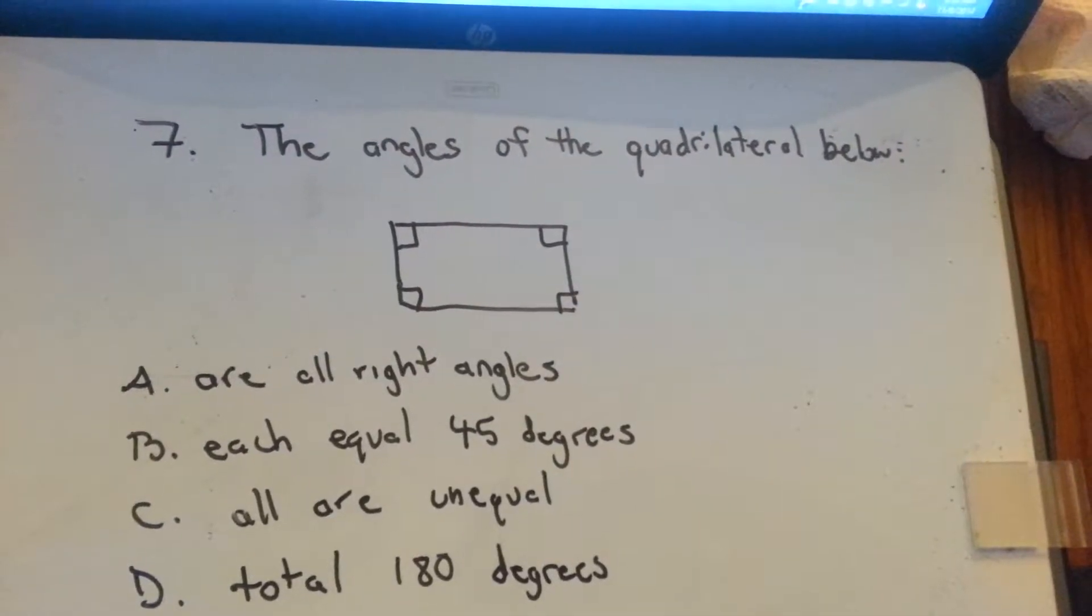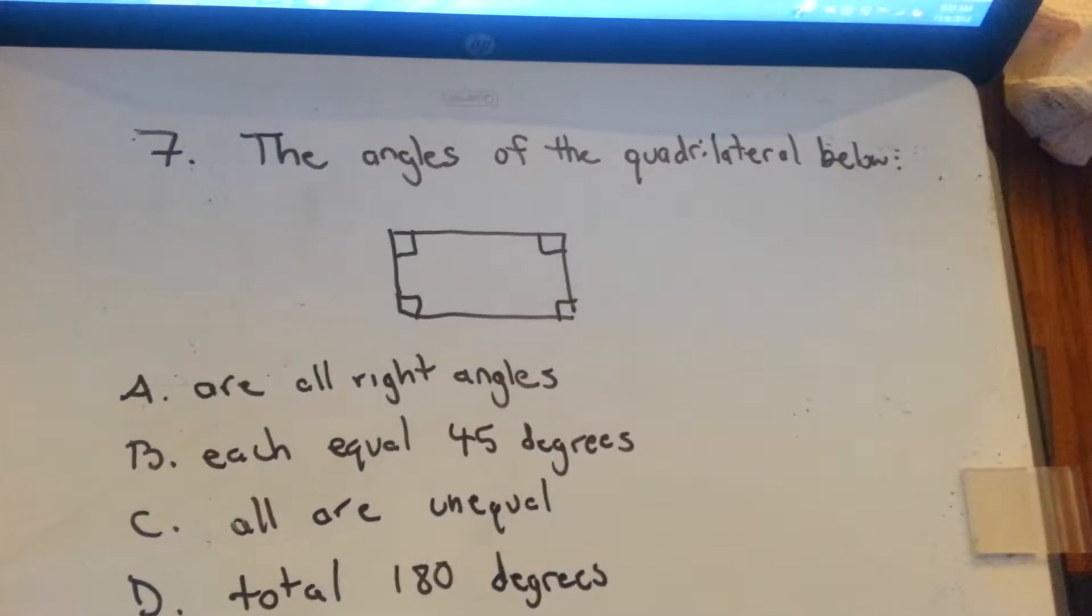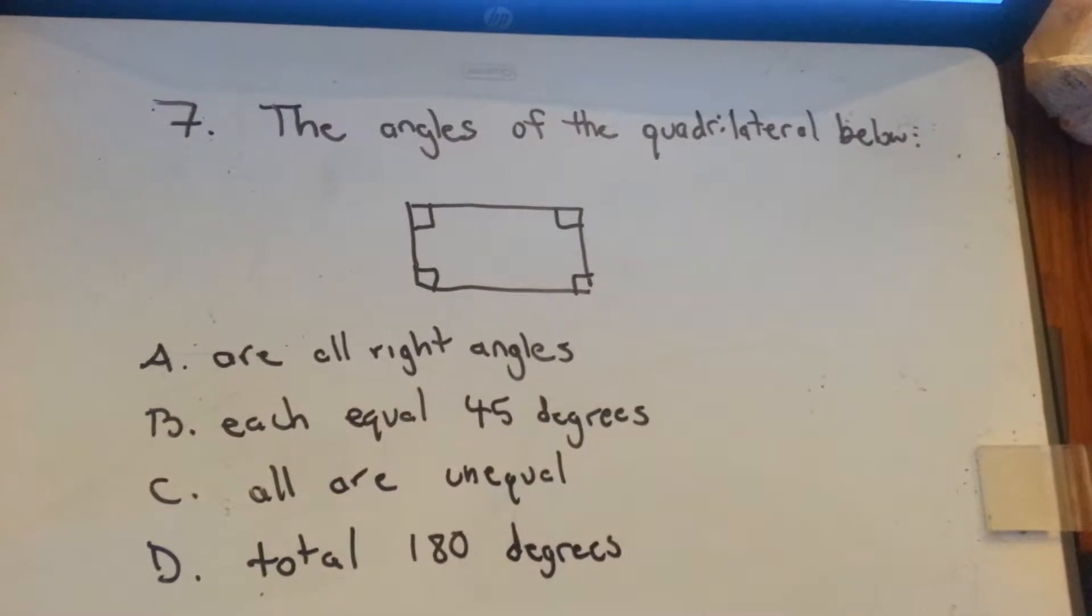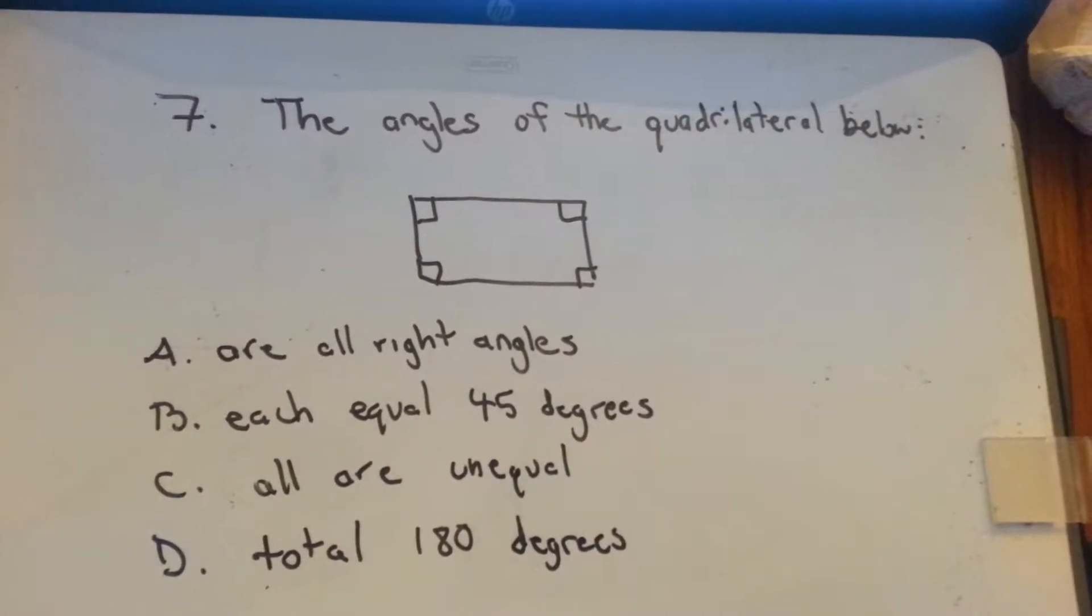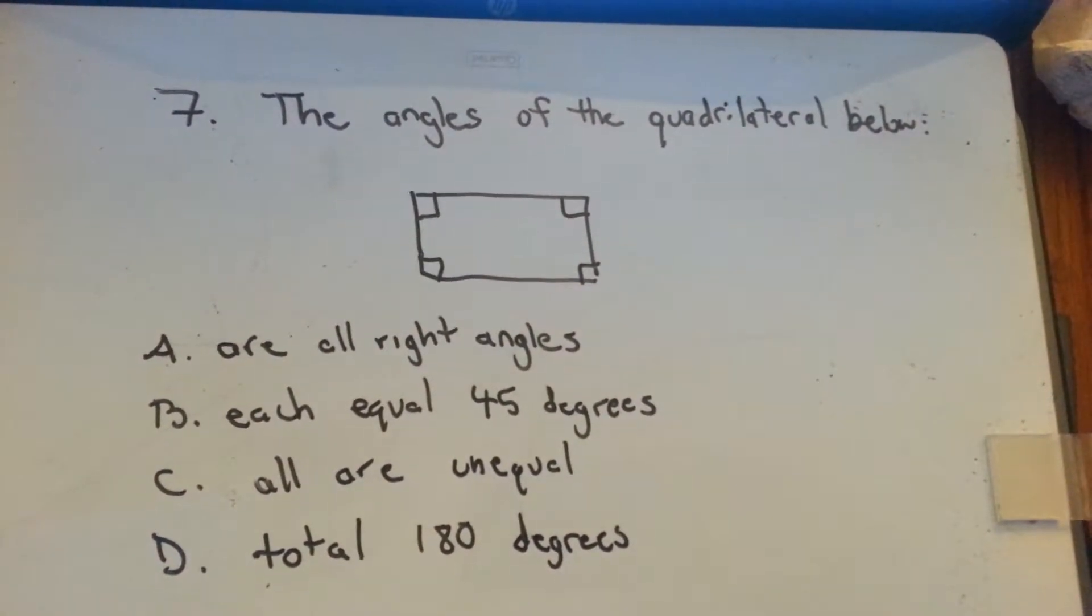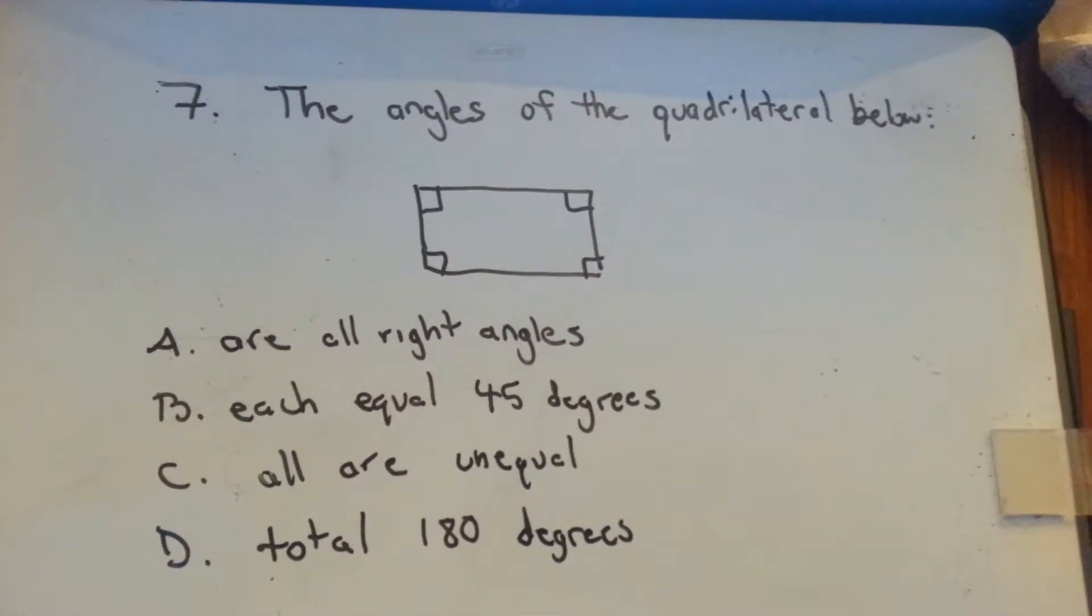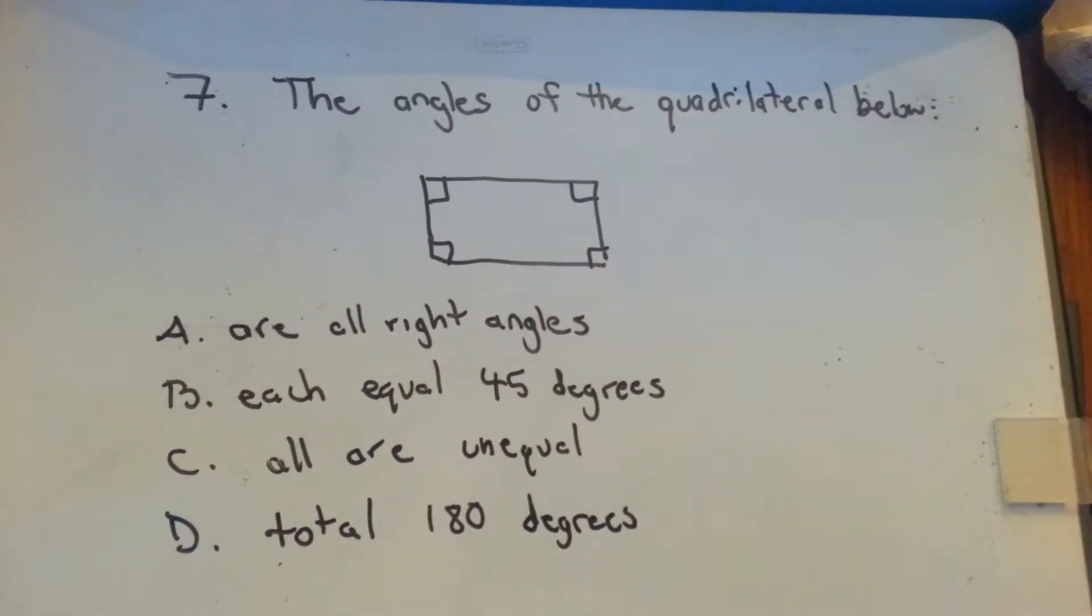The angles of the quadrilateral below: A are all right angles, B each equal 45 degrees, C all are unequal, or D total 180 degrees.